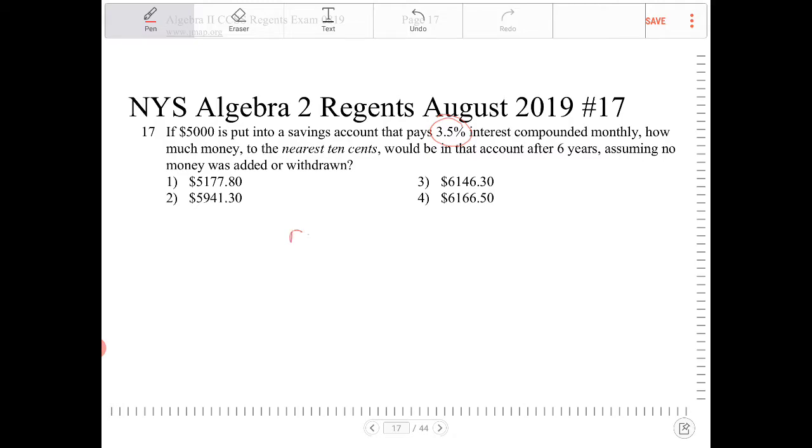So that's our R. It's 3.5% per year, and the frequency of compounding will be 12 because it's monthly. Our starting value is $5,000.